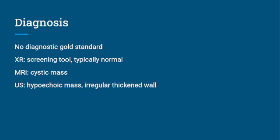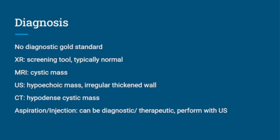Ultrasound will show a hypoechoic mass with an irregularly thickened wall, and CT — as in the case of our patient — showed a hypodense cystic mass. You can use ultrasound or another imaging modality to both aspirate and inject, which can be both diagnostic and therapeutic.